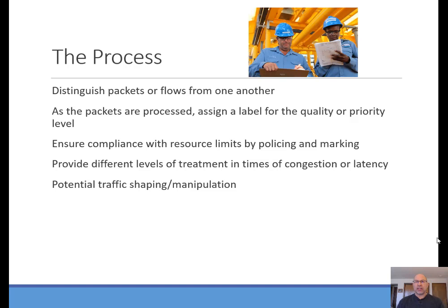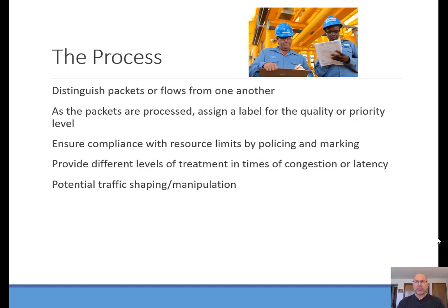You also need to understand that we have resource limits — QoS can't create something out of nothing. Within the bounds of your network capacity, you carve out some capacity for a particular flow or flows, and a policy acts on the limits you specify. Sometimes different levels of treatment are provided in times of congestion or latency — things can be triggered by network conditions. For example, queuing acts on a condition like queue depth to address congestion, which is a trigger-based technique.